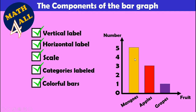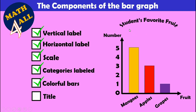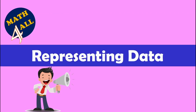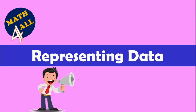The last component we need is a title for the graph. Here we are talking about fruits, so the title will be 'Students' Favorite Fruit.' These are all the components of a bar graph. Now let's represent data using the bar graph.